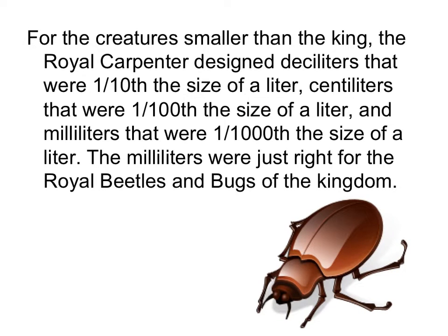For the creatures smaller than the king, the royal carpenter designed deciliters that were one-tenth the size of a liter, centiliters that were one-hundredth the size of a liter, and milliliters that were one-thousandth the size of a liter. The milliliters were just right for the royal beetles and the bugs of the kingdom.